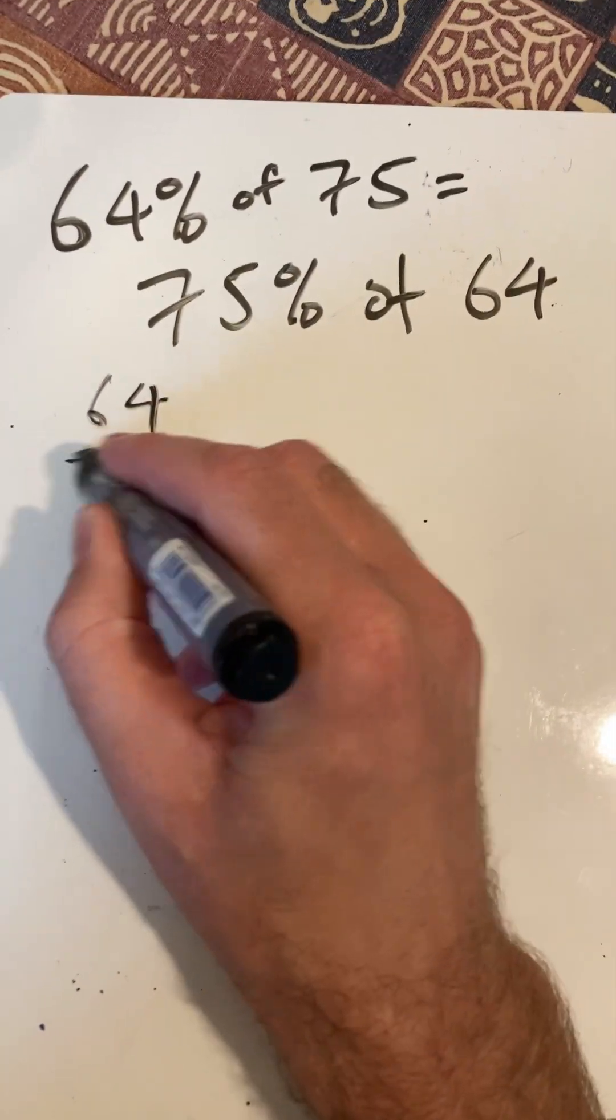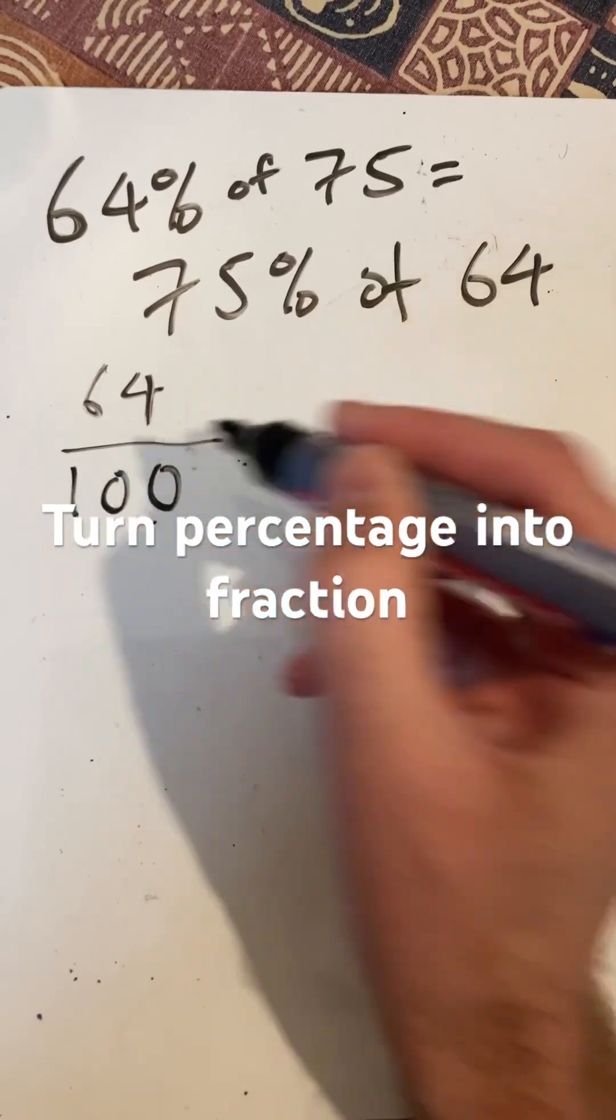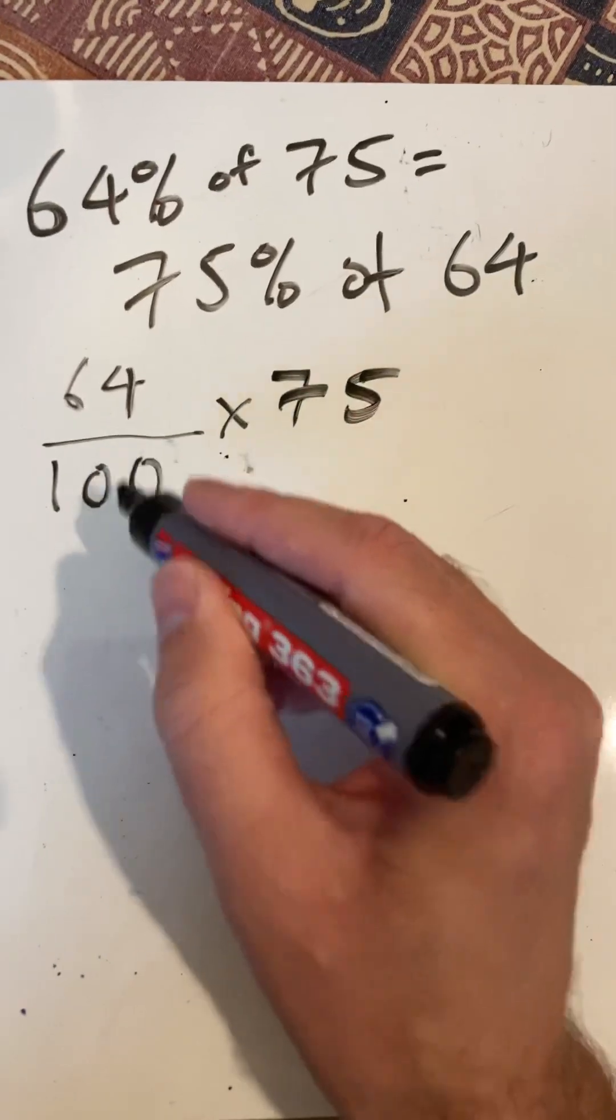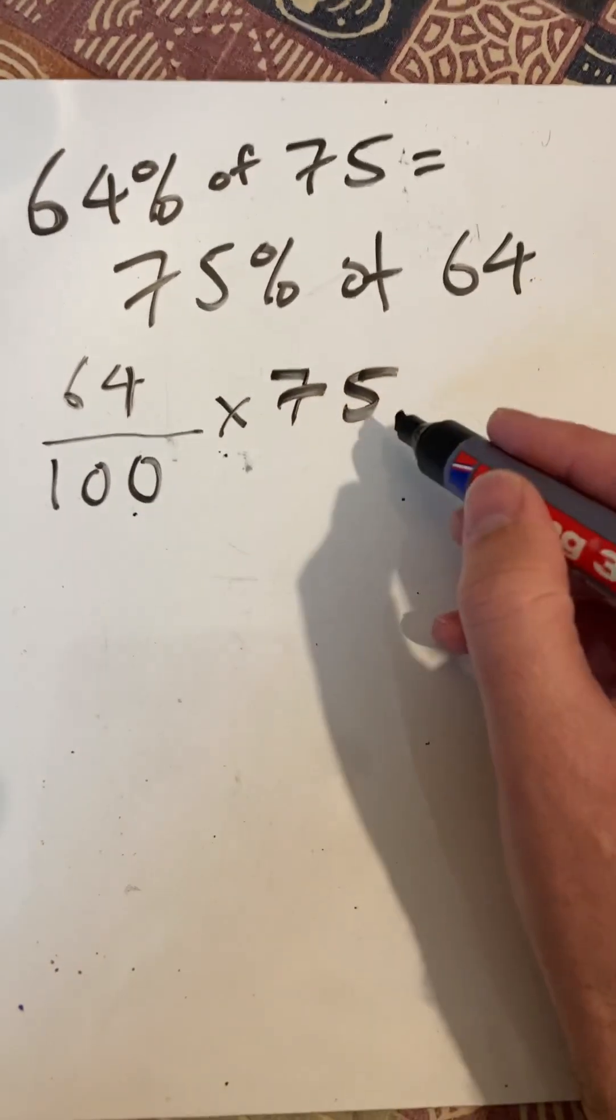64%, don't forget, is 64 over 100. Of means times. So we want 64 over 100 times 75.